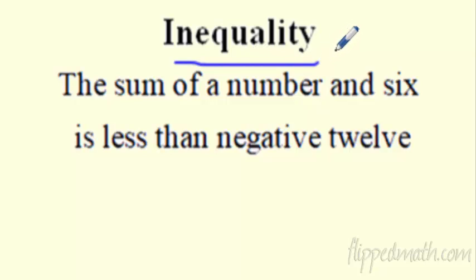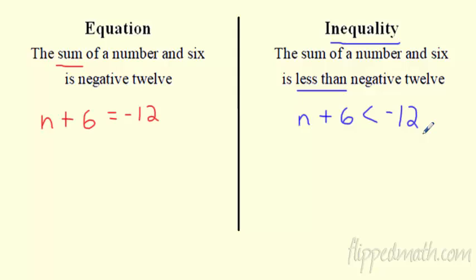Instead of an equation, we're going to put a symbol in there for greater than or less than. So I have the same problem here, the sum of a number in 6. But the difference here is it's less than negative 12. So do the same exact thing. The sum of a number in 6, but less than. So I'm going to put a less than sign, negative 12. I want all the numbers less than, not equal to.